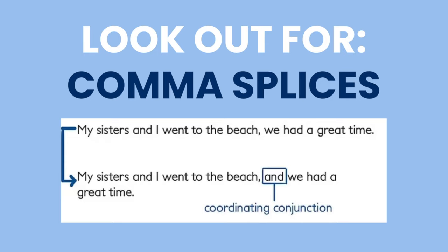Now for comma splices. Comma splices often come up on the SAT writing because they want you to be able to notice them. Comma splices are bad — it's when you take two independent clauses and connect them with just a comma. For example: 'My sisters and I went to the beach, we had a great time.' Since both parts are independent clauses, this is not okay. However, we can fix it by adding a coordinating conjunction: 'My sisters and I went to the beach, and we had a great time.' That is a correct sentence.